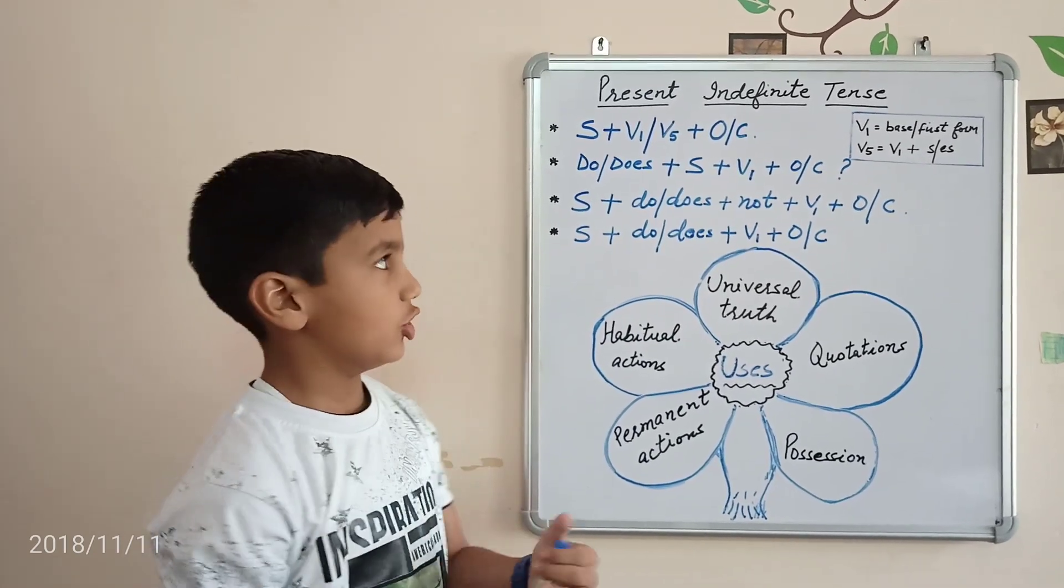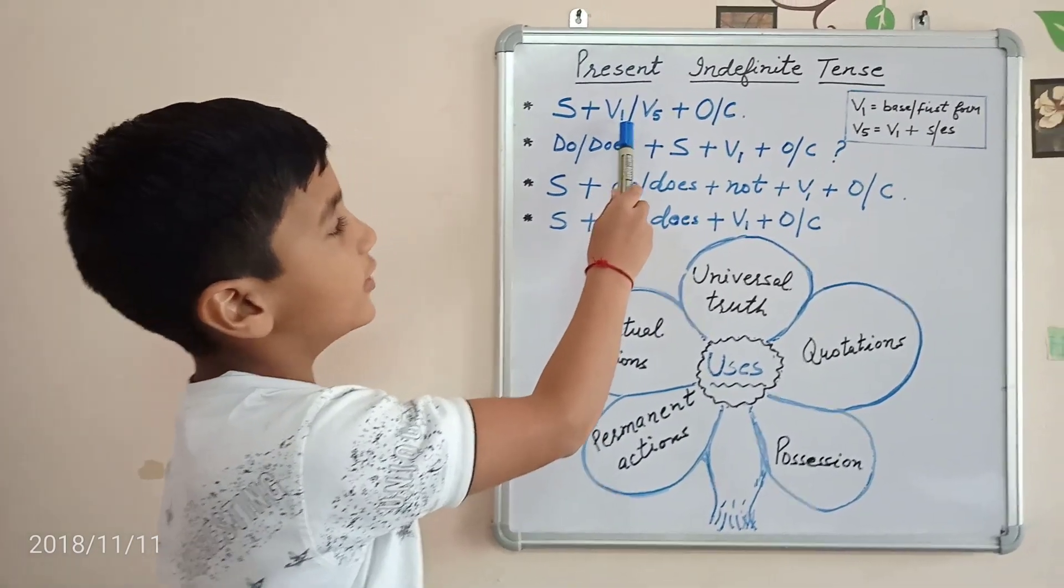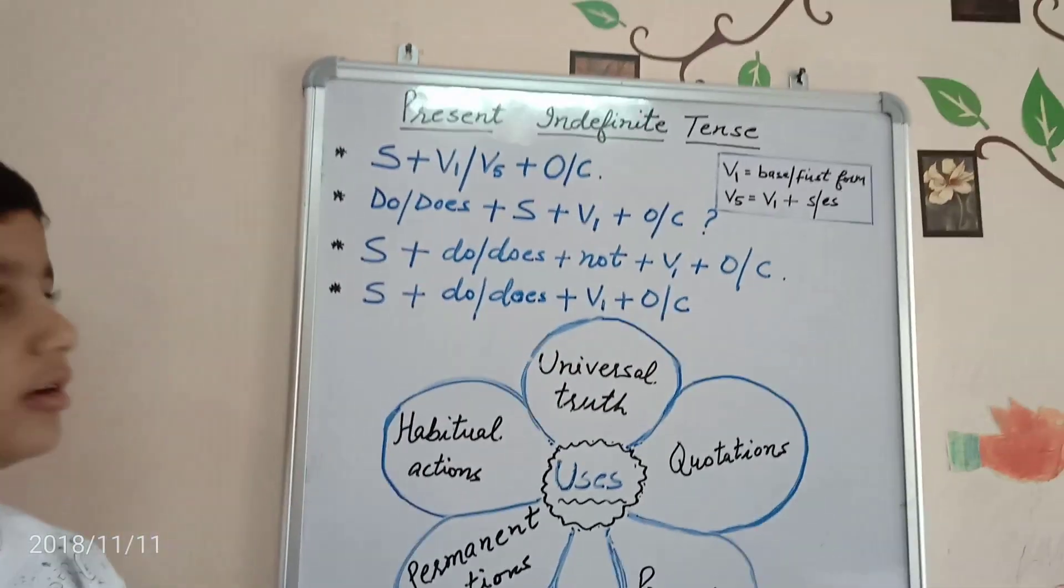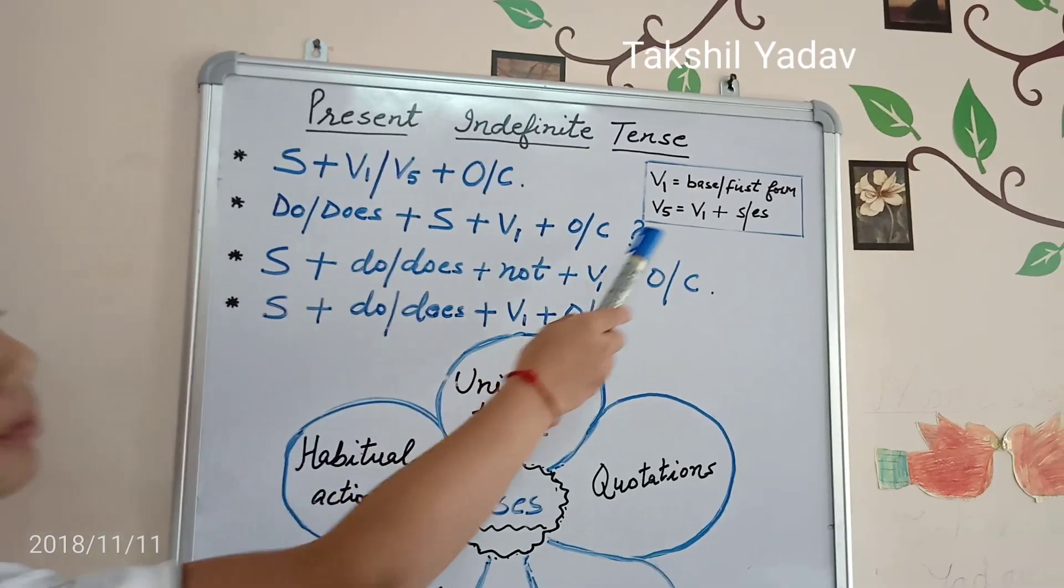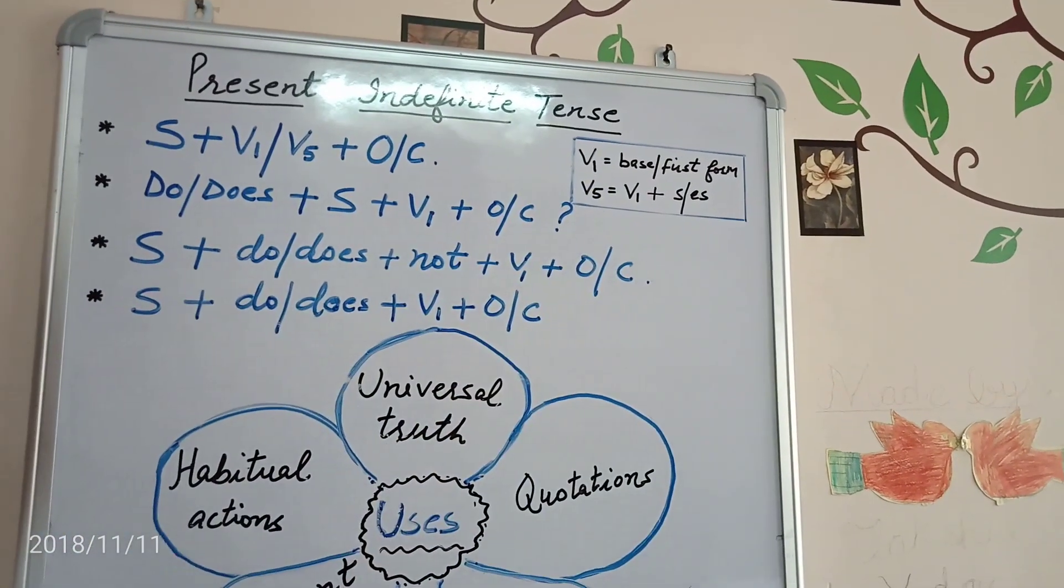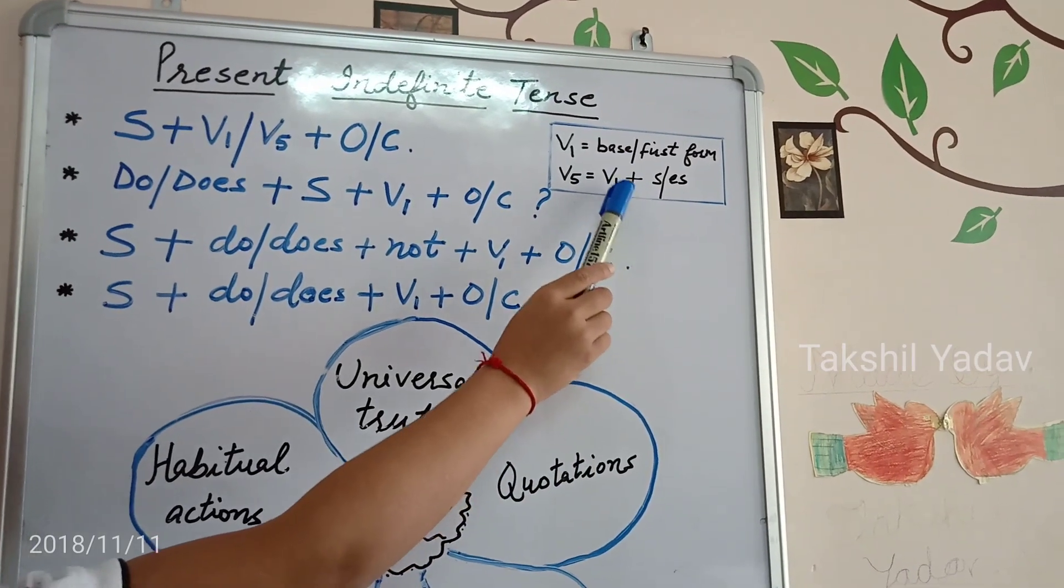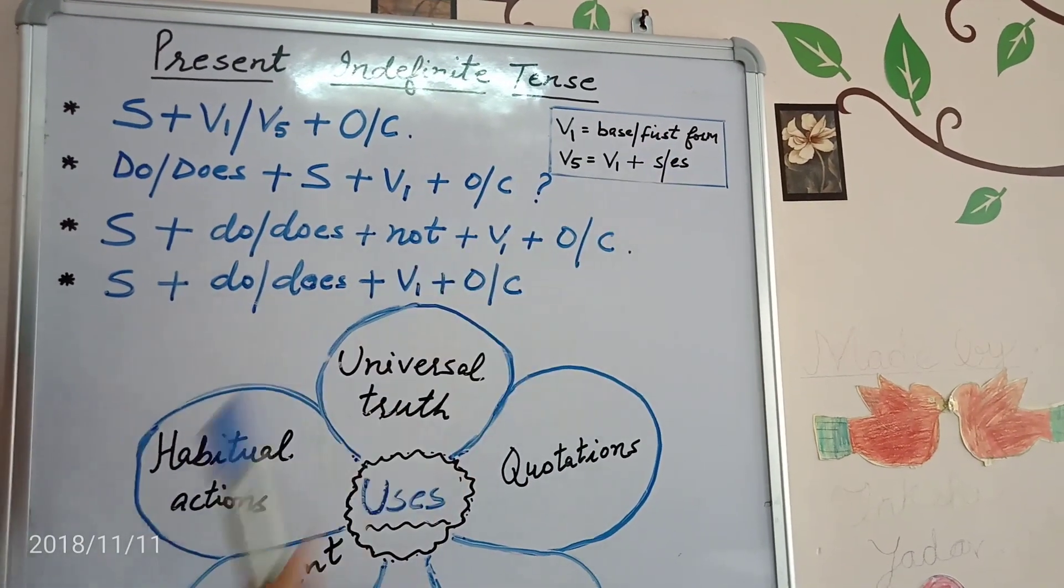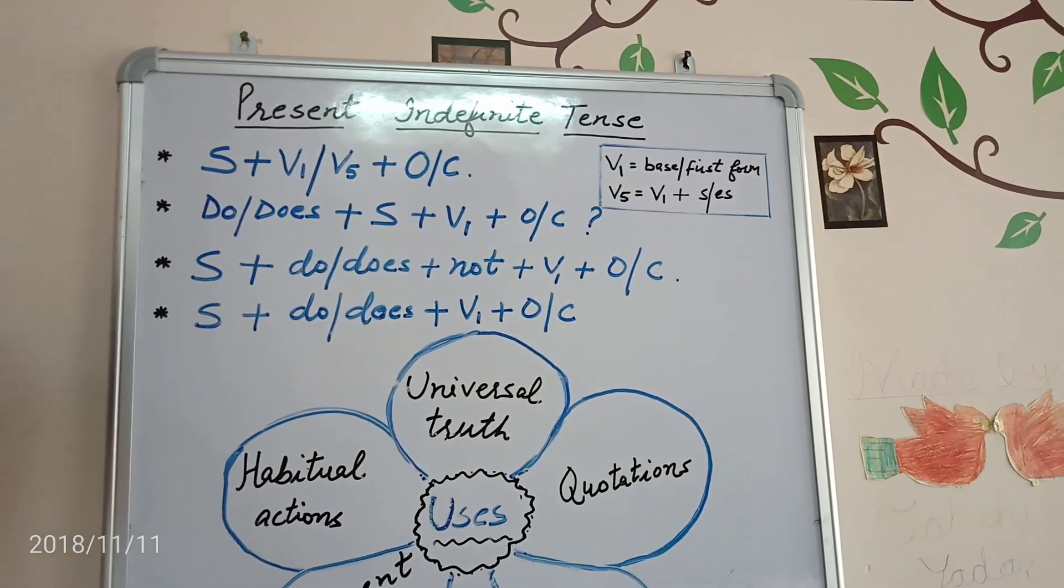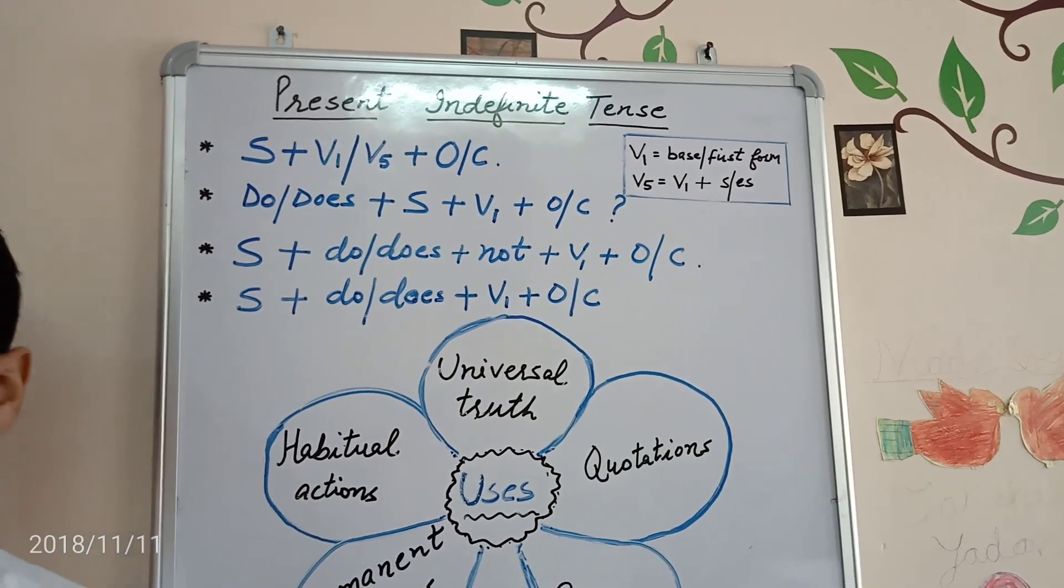Its affirmative structure: Subject plus V1 or V5 plus Object or Complement. Here, V1 is the base or first form of the verb and V5 is the base or first form of the verb added with S or ES. For example, I go to school daily. He reads a novel.